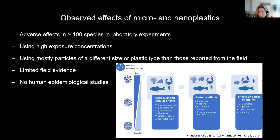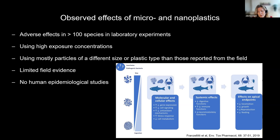The adverse effects of micro and nanoplastics could show themselves at different levels of biological organization, as shown in this figure. These could be very subtle effects at the molecular and cellular level — in gene expression or in stress responses — which could lead to systemic effects. Changes in immune function is something we're particularly concerned about. And ultimately changes in apical endpoints like locomotion, growth, and reproduction, which could ultimately lead to population level effects.